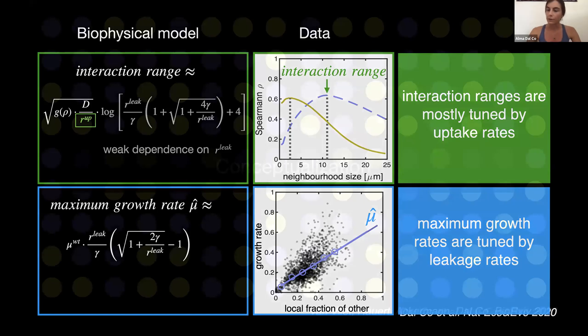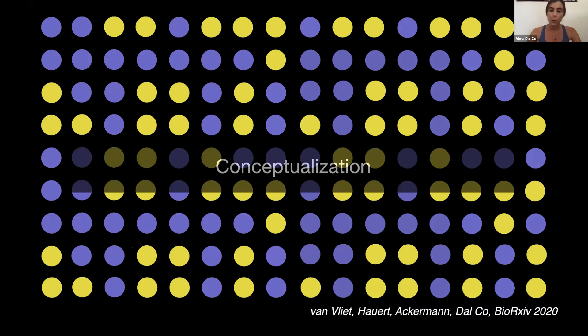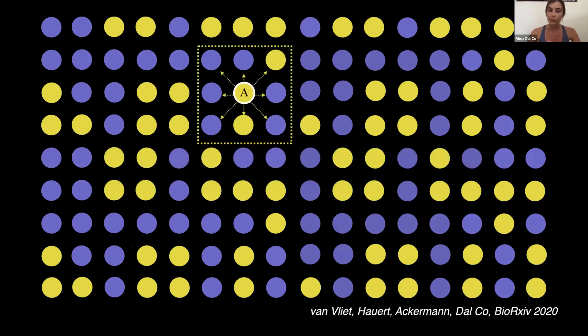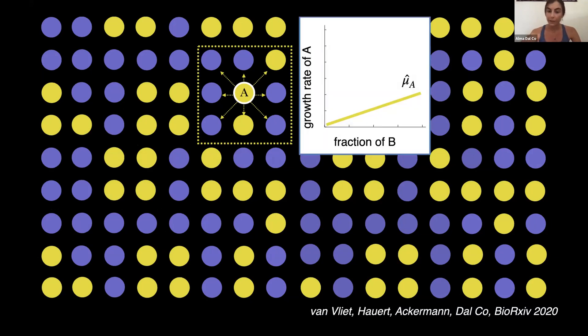These results give us a simple way of thinking of the problem. So what we did is that we dropped our computer, not literally, but we took paper and pen, and we decided to create a simple model of these communities where two cell types affect each other's growth. So we can think that each cell interacts within a fixed neighborhood. Now, the higher the fraction of the partner type within this neighborhood, the faster the focal cell grows.